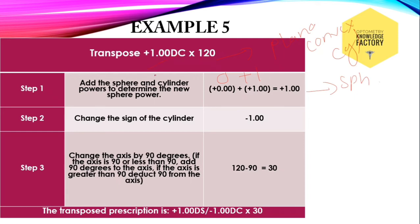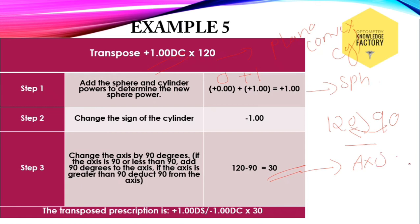Then change the sign. Here the cylindrical sign is plus, that is convex. Convert it into minus concave. Then change the axis by 90 degrees. Here the axis is 120, which is greater than 90. So subtract 90 degrees from 120, that is 30 degrees. This is the axis of the transposed form. The transposed form for a plano cylinder plus 1 diopter cylinder at 120 is plus 1 diopter sphere with minus 1 diopter cylinder at 30.